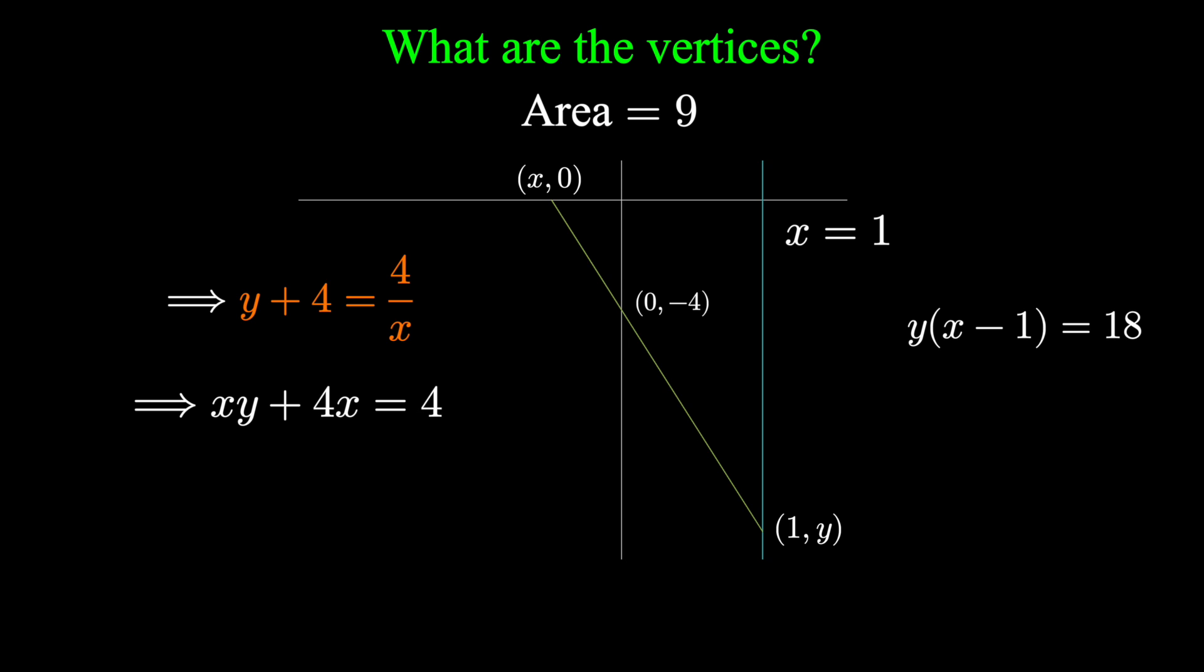Back to the equation with area: that equation was y times x minus 1 is 18, or xy minus y equals 18. We have two equations and two unknowns, so we can solve this. Fortunately these subtract very nicely. If we subtract the slope equation from the area equation, the xy term cancels out. We'd have 4x plus y is negative 14, or y is minus 4x minus 14.